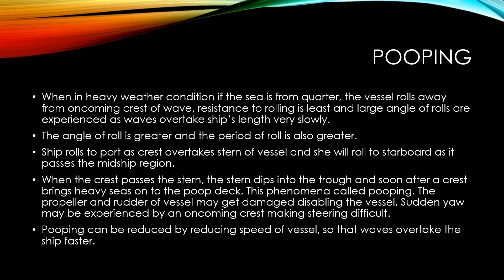When seas are from the quarter, the vessel rolls away from the oncoming crest — rolling resistance is least and large angles of roll are experienced. As waves slowly overtake the ship's length, the angle and period of roll are both greater. The ship rolls to port as the crest overtakes the stern, then to starboard as it passes the midship region. When the crest passes the stern, the stern dips into the trough, and an oncoming crest brings heavy seas onto the poop deck — this phenomenon is called pooping — potentially damaging the propeller and rudder. Pooping can be reduced by reducing speed so that waves overtake the ship faster.